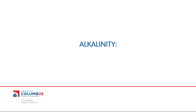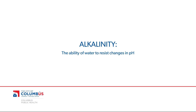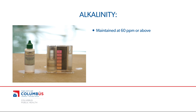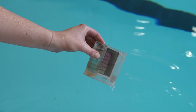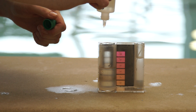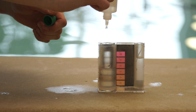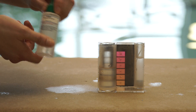Another aspect of balanced water is alkalinity, or the ability of water to resist changes in pH. Alkalinity should be maintained at 60 ppm or above and tested at least once per day. To test the alkalinity level, rinse and fill the comparator tube and then add the reagents per the test kit's instructions.